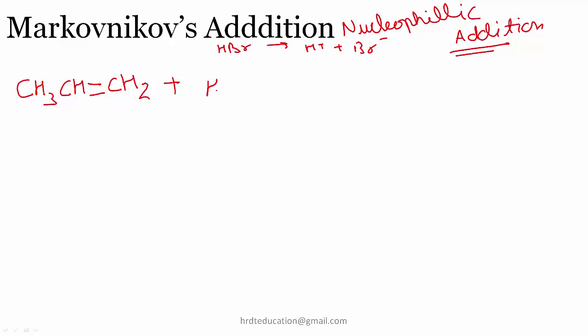Now H positive can do two things. It can either attack this carbon. If it attacks on carbon number 1, then what is the product formed? CH3CH positive CH3.